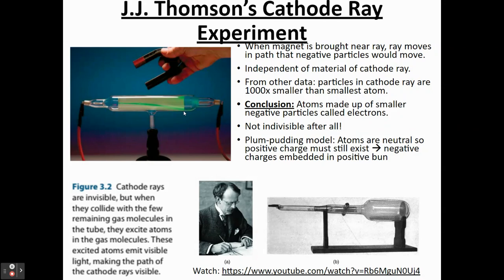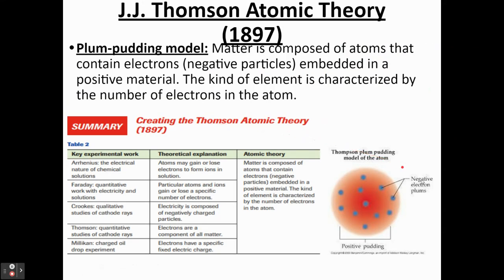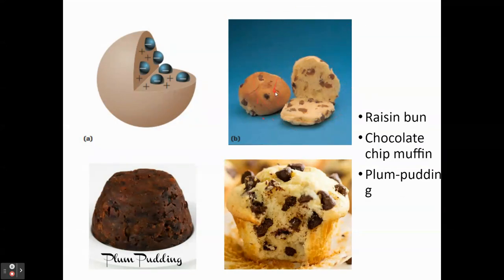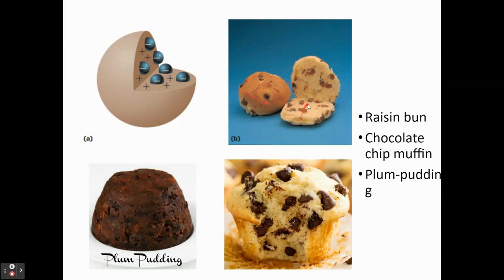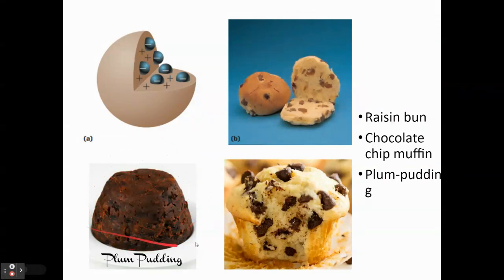The other thing Thomson said is: I know atoms are neutral overall, so if there are negative particles, there has to be something positive to make it neutral. So the positive is the bun, and the negative particles are stuck in the bun — almost like raisin bread. The doughy part is the positive stuff, and all the raisins are the negative particles, or like a chocolate chip muffin where the doughy stuff is the positive and the chocolate chips are the embedded electrons. He called it the plum pudding model because that was a dessert he was familiar with at the time.